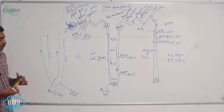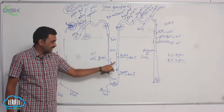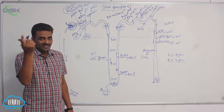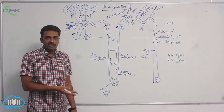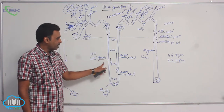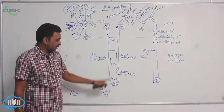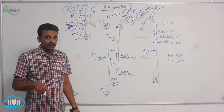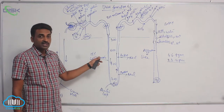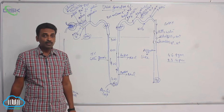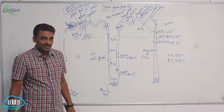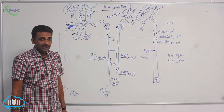The descending limb and ascending limb of Henle's loop are structurally different, so their functions also differ. The descending limb contains simple squamous epithelium and is permeable only to water, which exits by osmosis. The ascending limb is thick and impermeable to water — it is permeable only to salts, and salts are pumped outside by active transport.